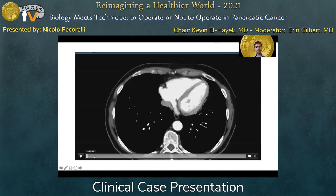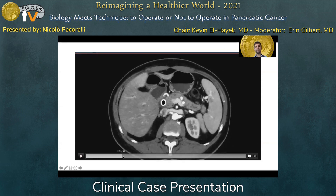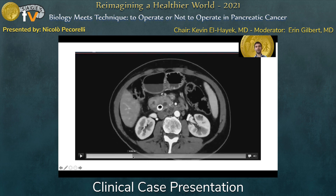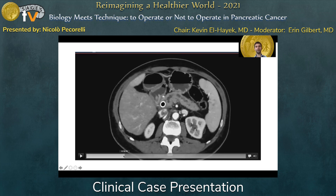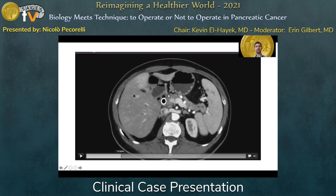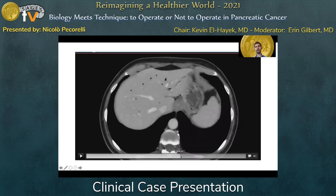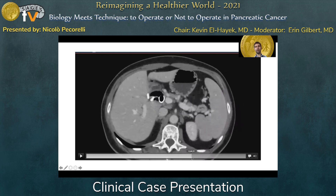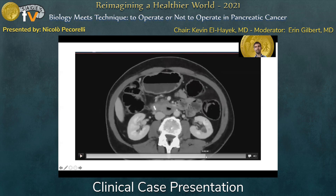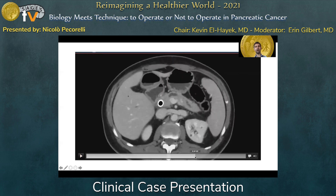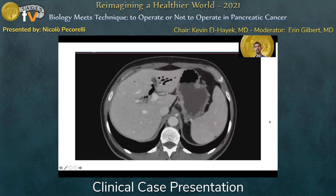Looking at the CT scan arterial phase — those findings are not metastases. You can see the dilation of the pancreatic duct that stops where the lesion is, which is pretty small. The superior mesenteric artery is far and absolutely free. The common hepatic artery is absolutely far from the tumor. No apparent metastasis, no free fluid. Going to the venous phase, we follow the portal vein and you can see it is absolutely far from the lesion — no infiltration, even below. So this is a resectable pancreatic cancer with a large duct in a healthy woman.